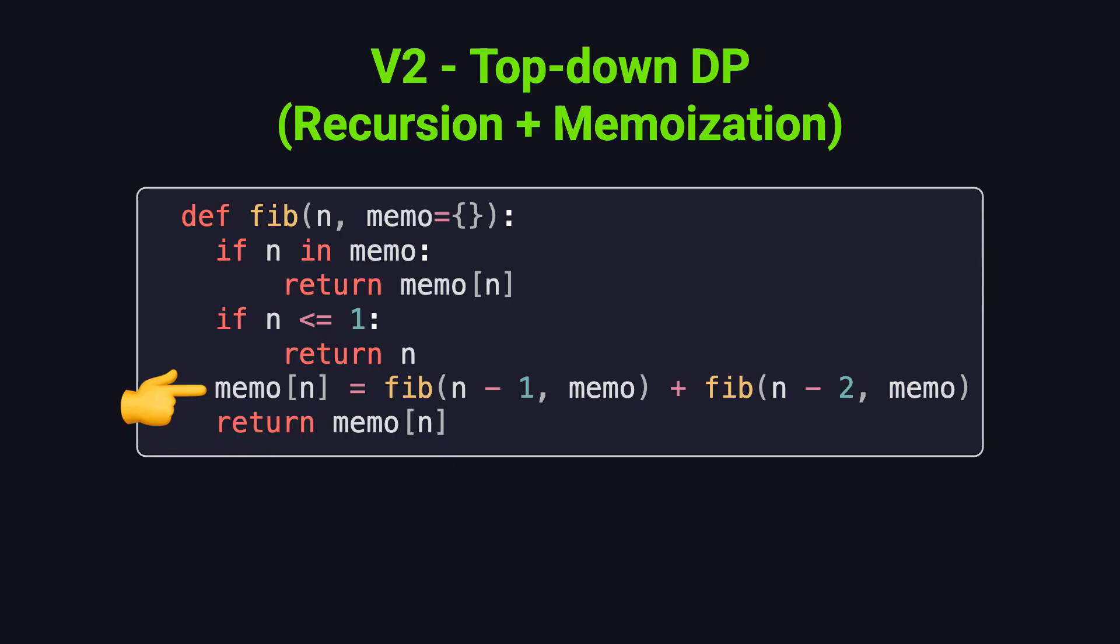Now, each unique value of n is only computed once, then cached in memo. After that, anytime we need it again, we just grab it straight from the dictionary. This brings the time complexity down from exponential to linear, and the speedup is dramatic. This is our first dynamic programming approach, recursion with memoization.